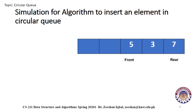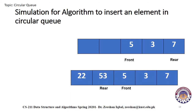Suppose we have three elements in a queue and we want to add another value. According to the circular queue, if the last inserted value is at the last position, the new value will be added to the first index of the queue. So if we add 22, it will be added at index zero. Adding another value 53 will place it at index one. So after two insertions, the queue will look as follows.